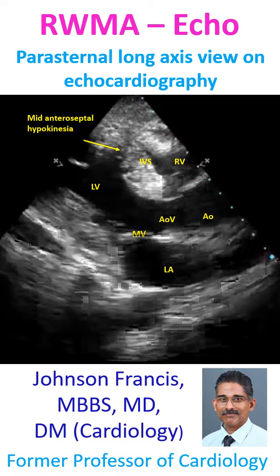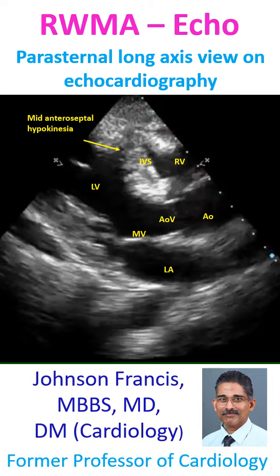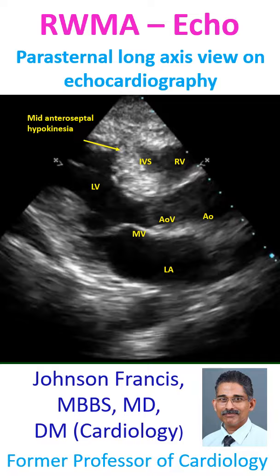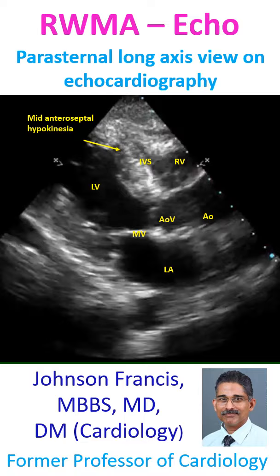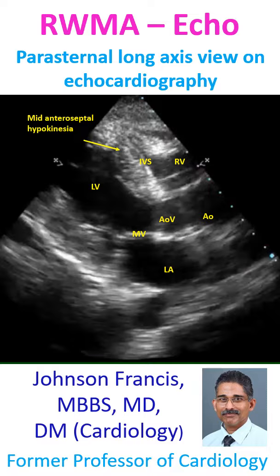This is the parasternal long axis view, known in short as PLAX view on echocardiography. Usually this view is obtained first during adult echocardiography. It shows portions of the right ventricle, left ventricle, aorta, and left atrium. The interventricular septum is seen between the two ventricles. Aortic and mitral valve motions are also visible.